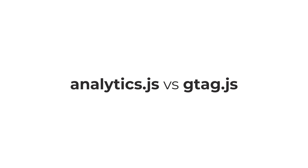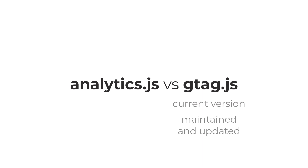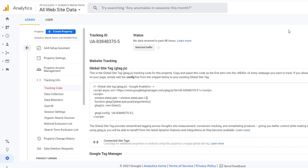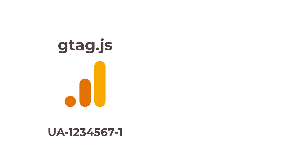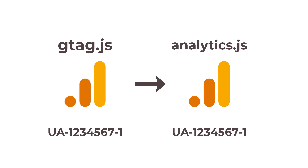So what are the differences between analytics.js and gtag.js? G-Tag is the current version of the tracking code and is maintained by Google, while analytics.js is no longer updated — it still works, but it is unknown for how long. In the interface of Google Ads and Google Analytics, the tracking codes are always using G-Tag. If you are working with Universal Analytics, gtag.js loads analytics.js as well, because it is needed for the older version. But when it comes to GA4, only the G-Tag library is used.